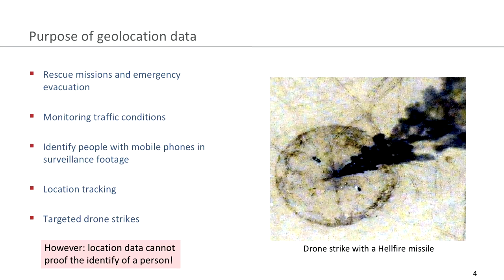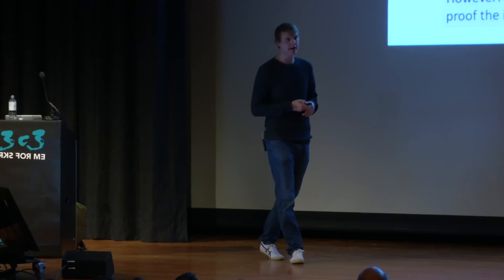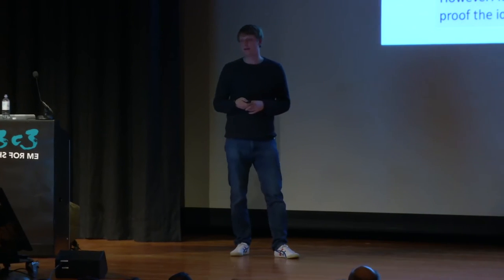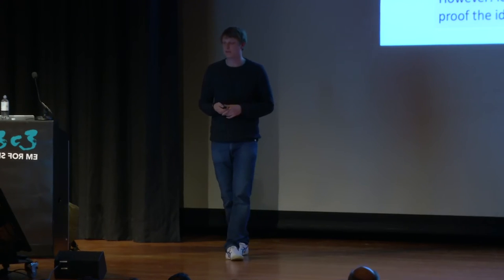The purpose of geolocation data — it is a neutral technology. We can use it for rescue missions, for example if somebody got lost in the forest or in the mountains. Or if you use Google traffic, you can profit from monitoring traffic conditions. But we can also use it to invade the privacy of persons, for example identifying people on surveillance footage, or tracking the location of a certain individual over a longer period. And certainly, we can use these data for targeting drone strikes.